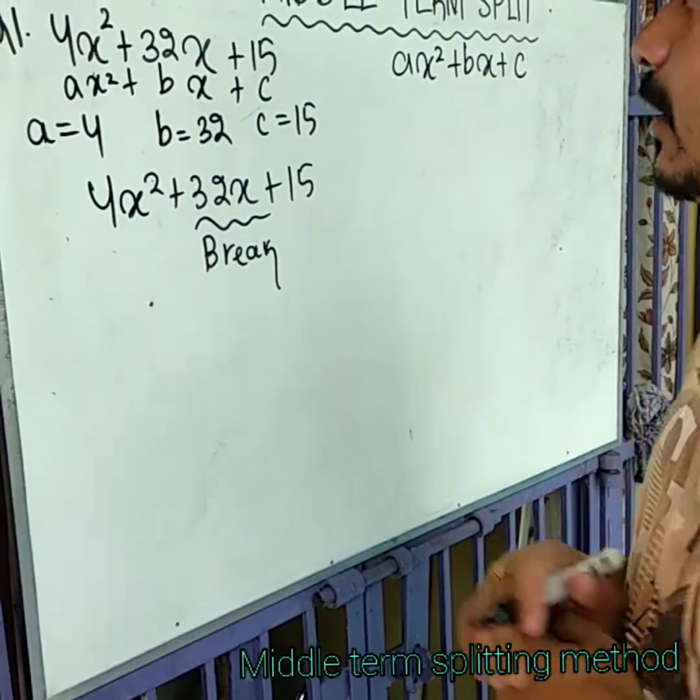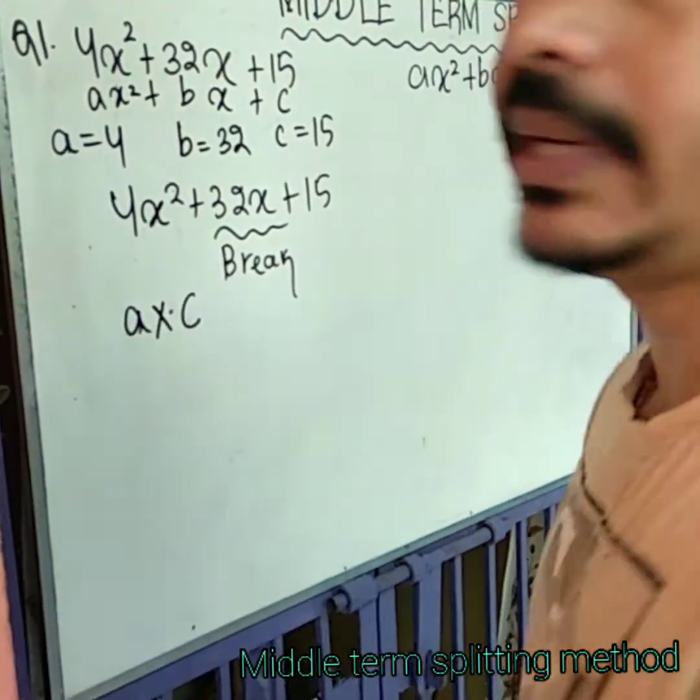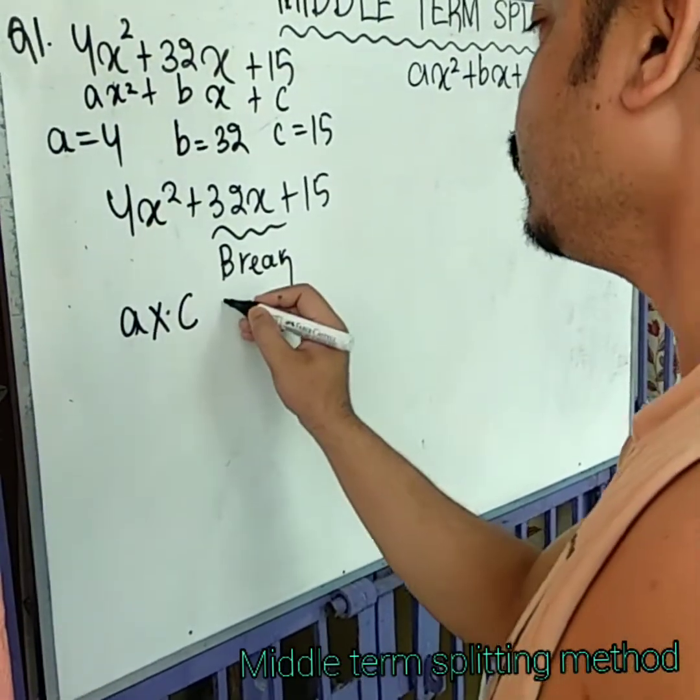How we break? We break by a and c multiply. Okay?